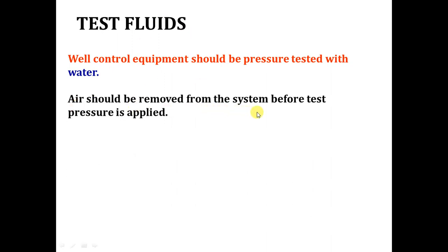Number two: air should be removed from the system before test pressure is applied. This is very important, especially in workover. If you are making a pressure test against a nipple or check valve in the tubing, and you fill the string very quickly with the pump, a lot of gas will be trapped inside the tubing. The gauge will not give you a correct reading, and it may appear as leakage when it is actually just air bubbles. Also, once you finish the test, those trapped gases may cause a drop in hydrostatic pressure, which could lead to a real well control situation.